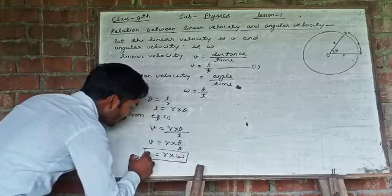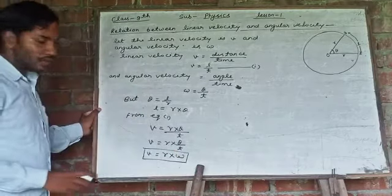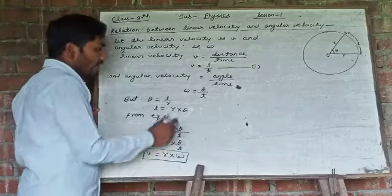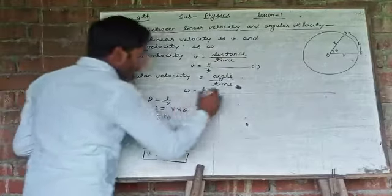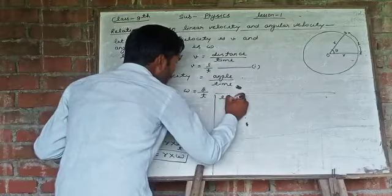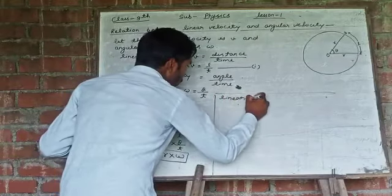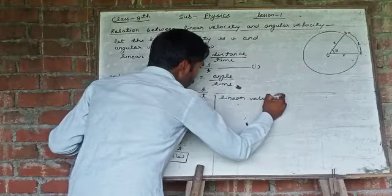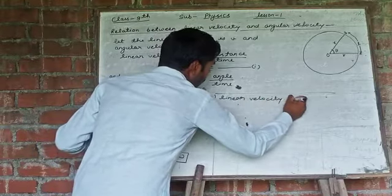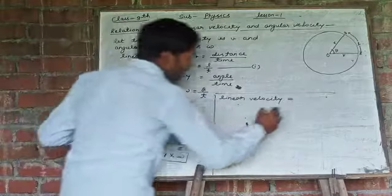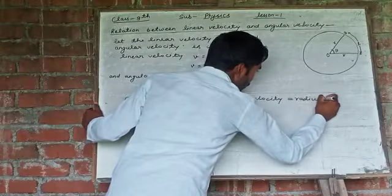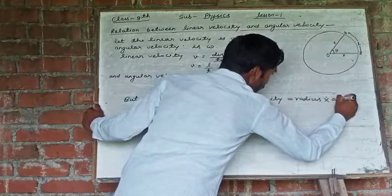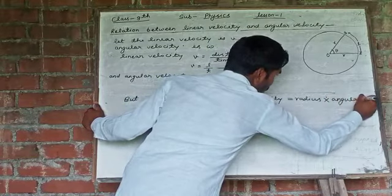So this is the relation between linear velocity and angular velocity. From here we conclude that linear velocity is equal to R means radius into angular velocity.